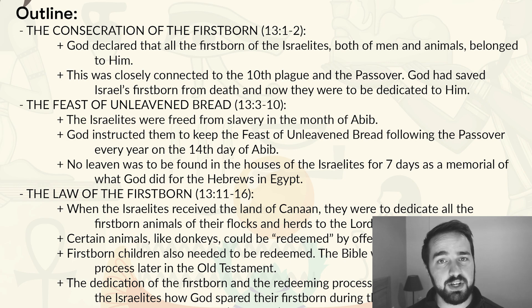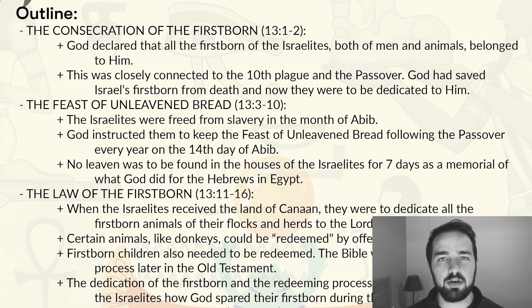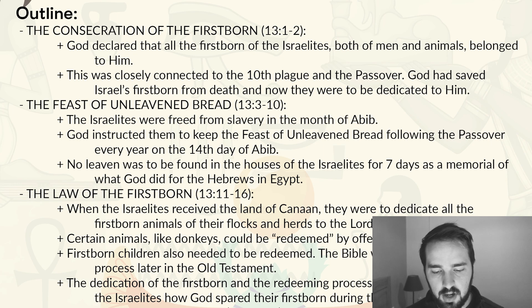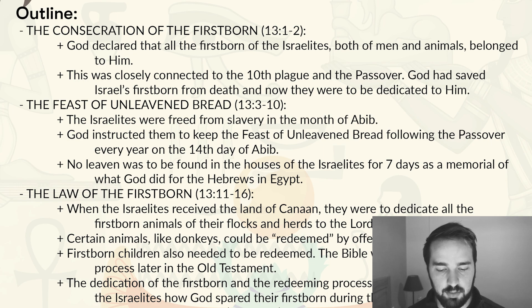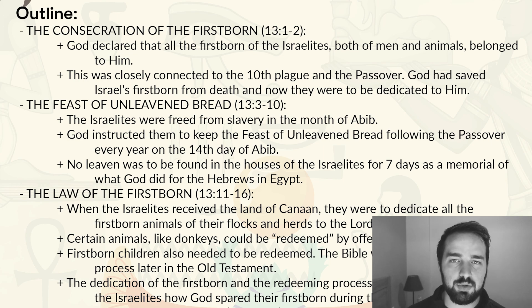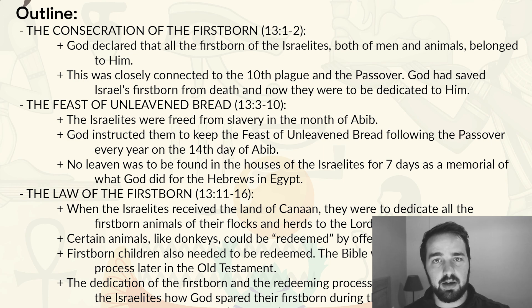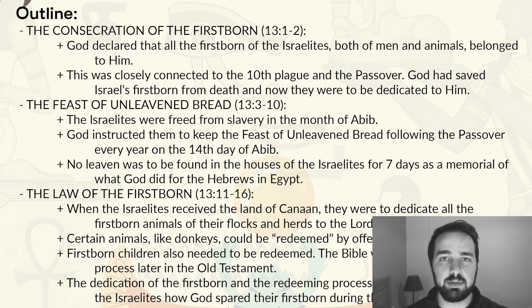I've broken this chapter down into four sections. The first section, verses one through two, is the consecration of the firstborn. This concept is introduced here but we'll read about it more throughout the Old Testament as God's laws are explained further in books like Leviticus and Deuteronomy. God declared that all of the firstborn of the Israelites, both men and animals, belonged to him. This was closely connected with what happened in Egypt during the 10th plague — God had saved the Israelite firstborn from death, and now he was declaring that they needed to be dedicated to him.